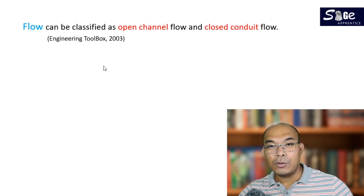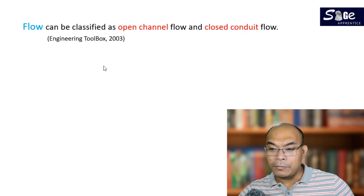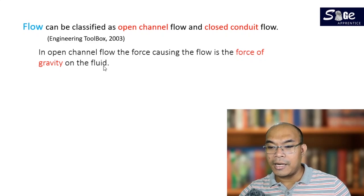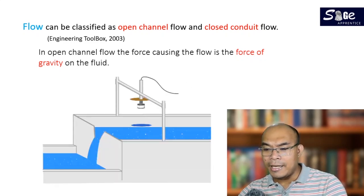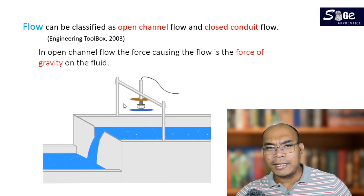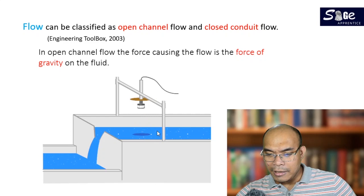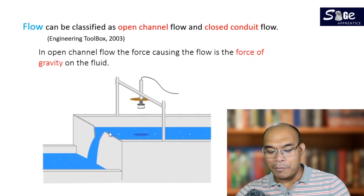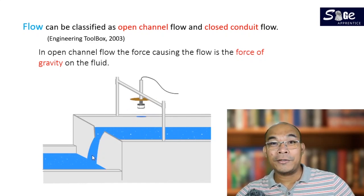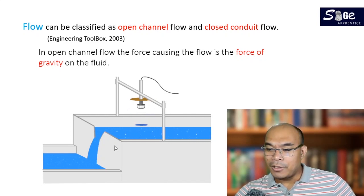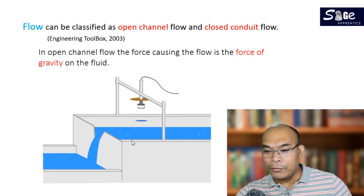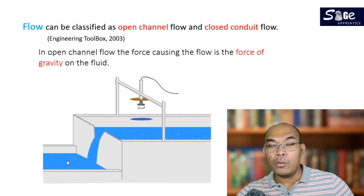Let us first differentiate open channel and closed conduit flow. According to Engineering Toolbox, in an open channel flow, the force causing the flow is the force of gravity on the fluid. Examples include rivers and open bodies of water — anything without a sealed pipe. The most common example is waterfalls. The flow is affected by elevation, so there is a flow from a high elevation towards a lower elevation.